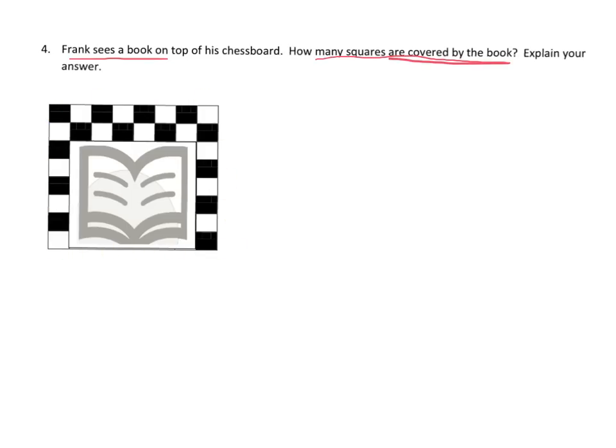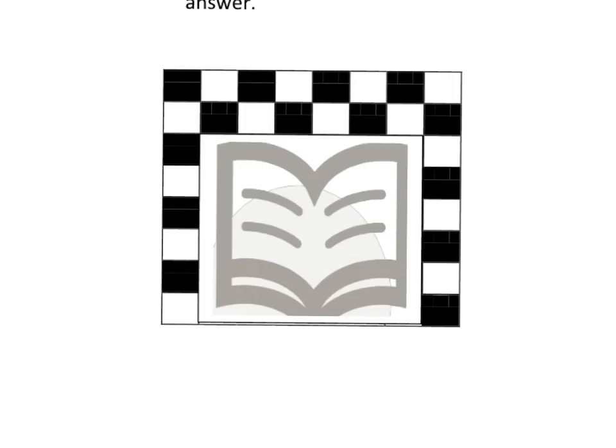The last problem for this video says: Frank sees a book on top of his chessboard. Here's the book and here's the chessboard. It asks: how many squares are covered by the book? Let's zoom in. Here's the book right here, and we're being asked how many square tiles this book is covering.